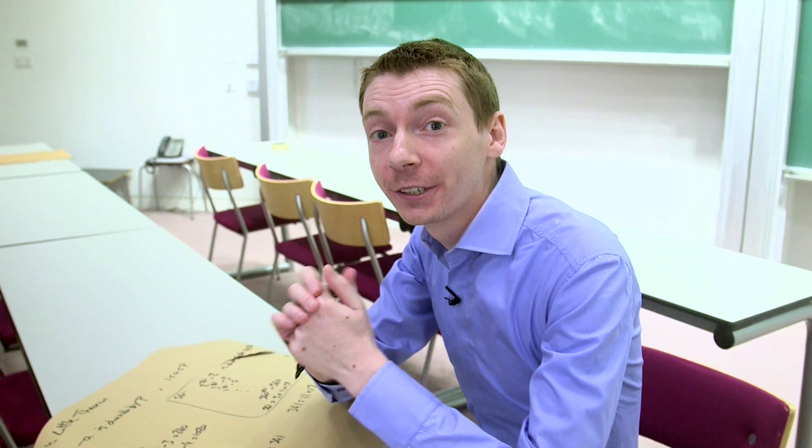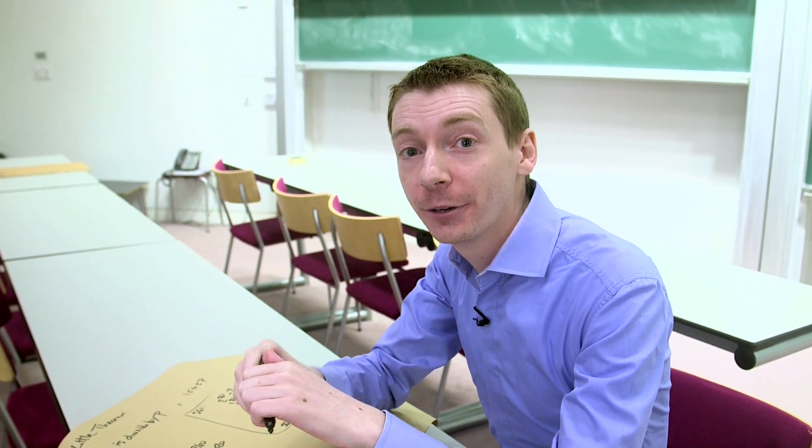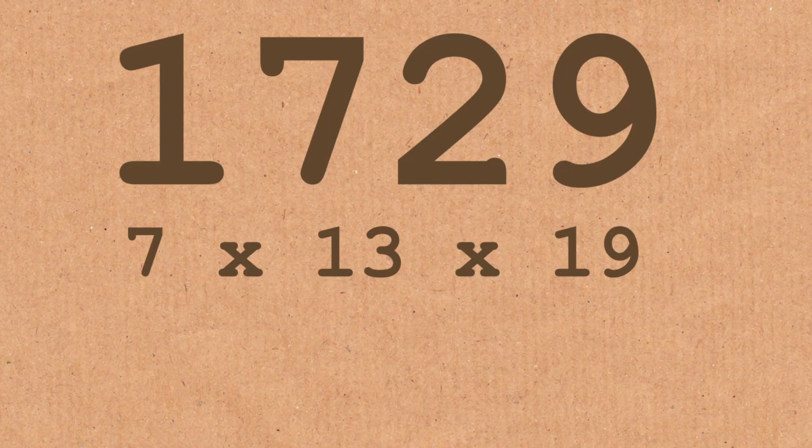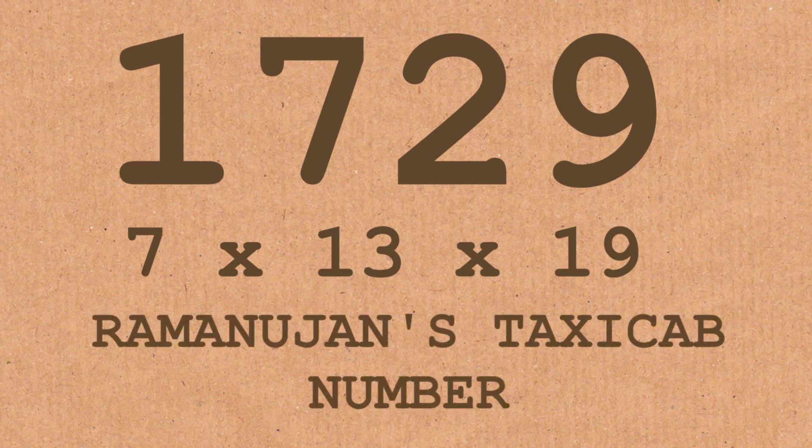The third Carmichael number is a mathematician's favorite: 1729. Now, what do you reckon, Brady — do you think this is a good test or not?